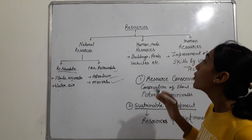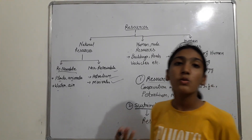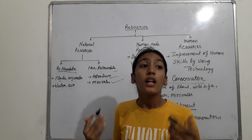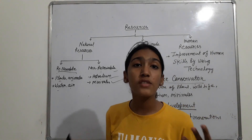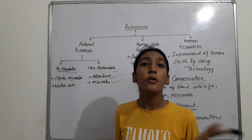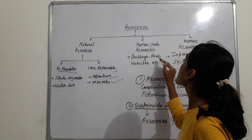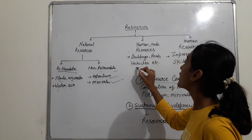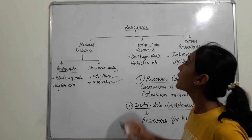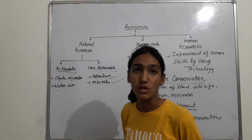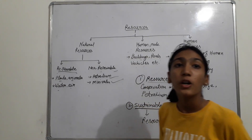The second main type is human-made resources. Human-made resources are resources which are made by humans, like buildings, roads, and vehicles. It is a very important resource for humans.